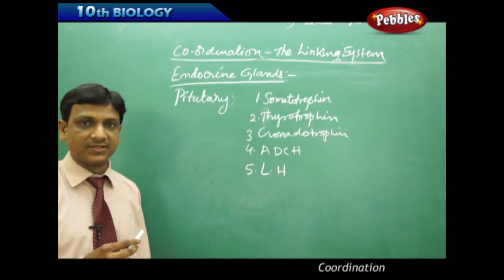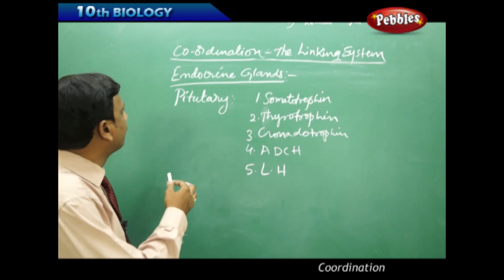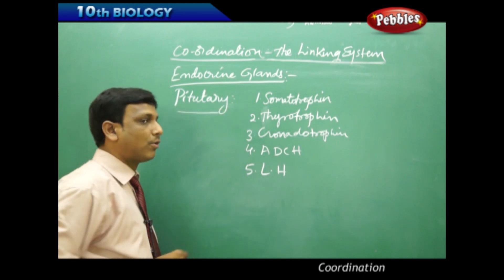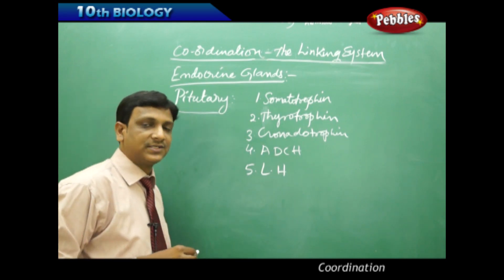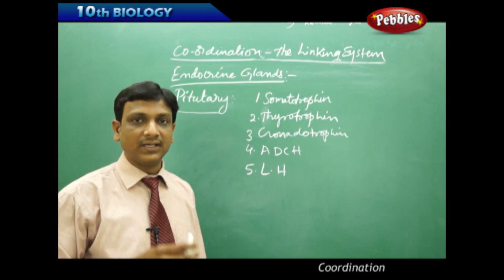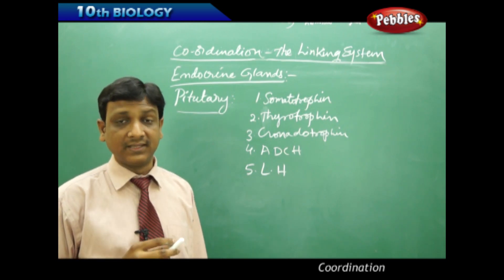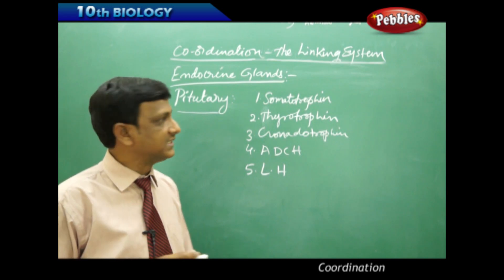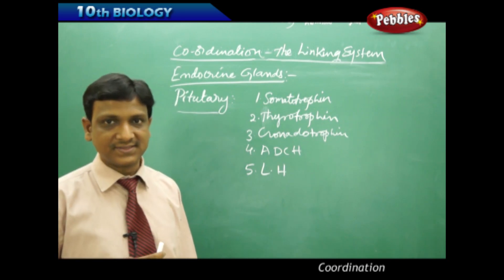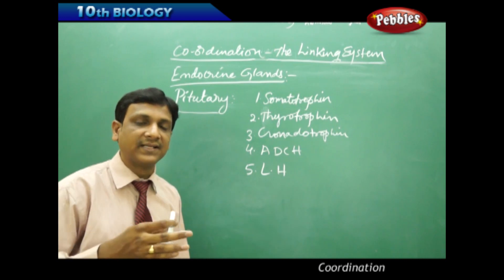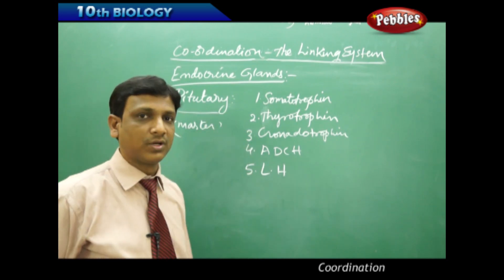Let us look at the various endocrine glands present in our body and their secretions and functions. The main, important, or master gland of our endocrine system is the pituitary gland, which is located in the floor of the brain. The pituitary gland secretes several hormones which influence and control other glands, and that is the reason why it is called the master gland.